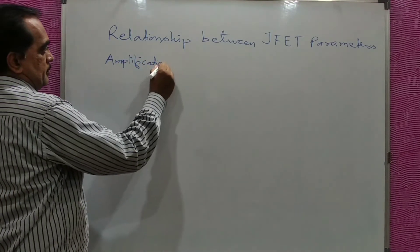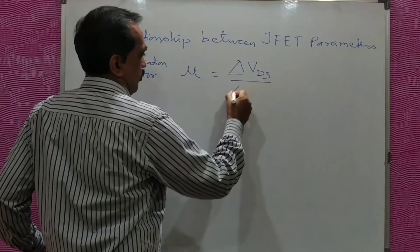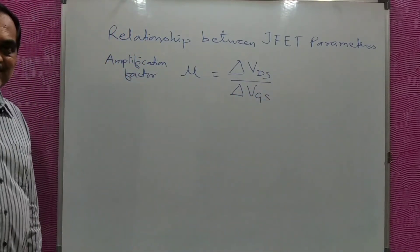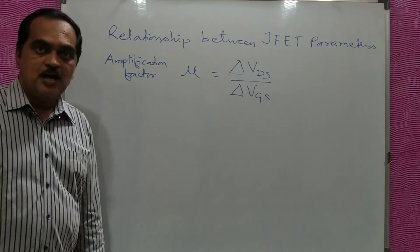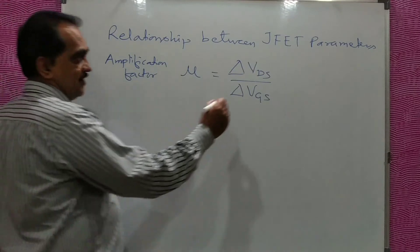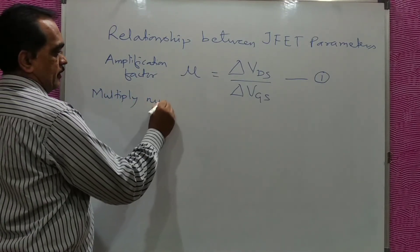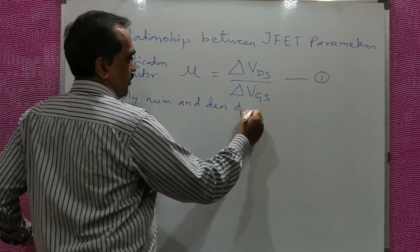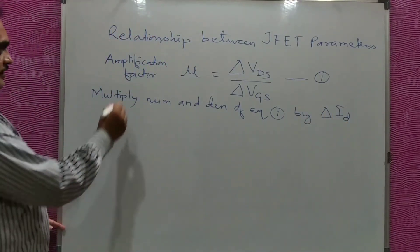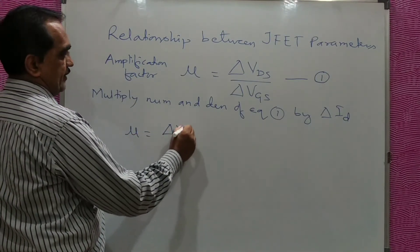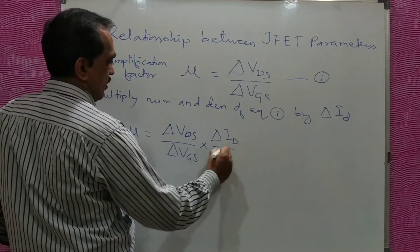Amplification factor Mu was given as the change in output voltage upon change in input voltage delta VGS. This is the equation we saw — amplification factor equals delta VDS upon delta VGS. Now let this be equation number one. We will multiply the numerator and denominator of equation one by delta ID, the change in output current.